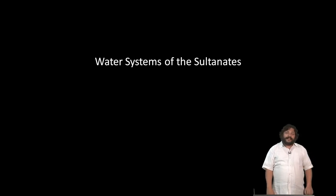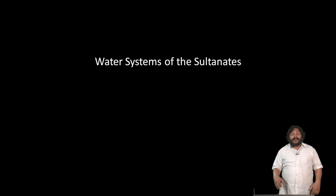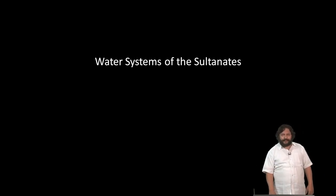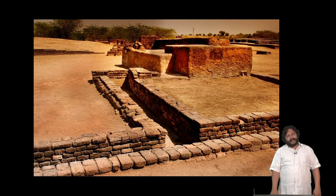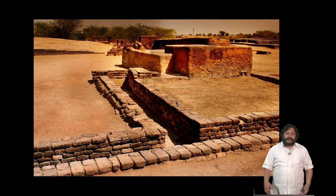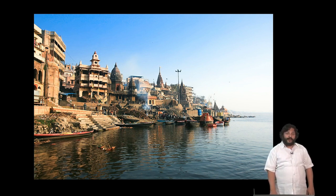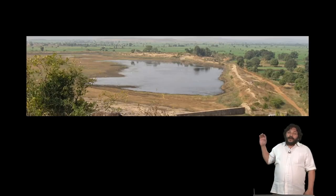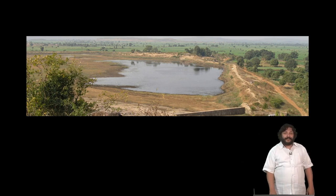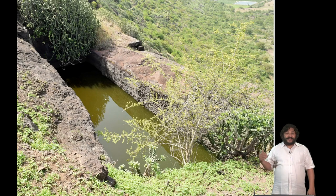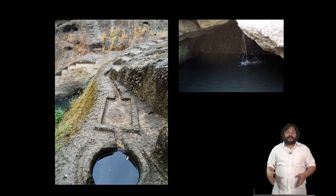The other big thing brought in as a technology by the Sultanates are the water systems, which allow them to build cities in places where you could never have imagined them. As opposed to the Indus Valley civilization where you have a problem of excess water that needs to be drained out, or Indian cities always along river banks with a perennial source of water, what you start having is the large-scale construction of dams and cisterns in the Buddhist period to store water. If you go to the Kanheri caves, you can see carved into the rock various kinds of devices to channel and pool water.